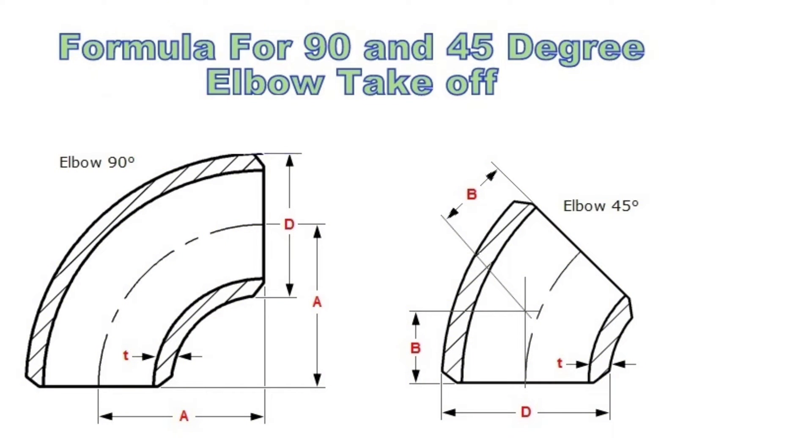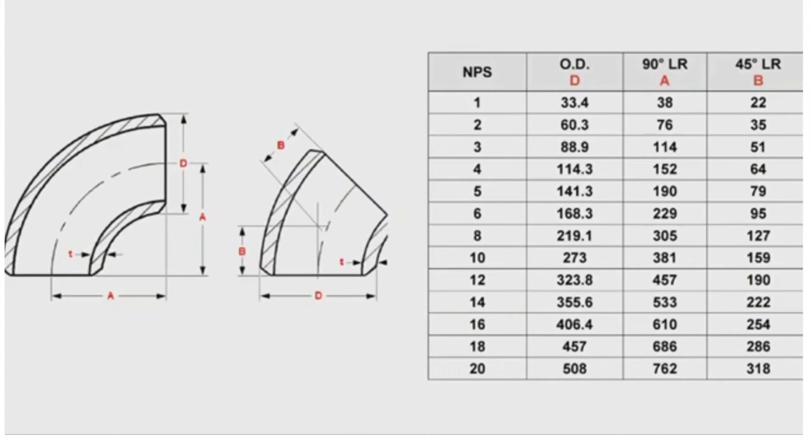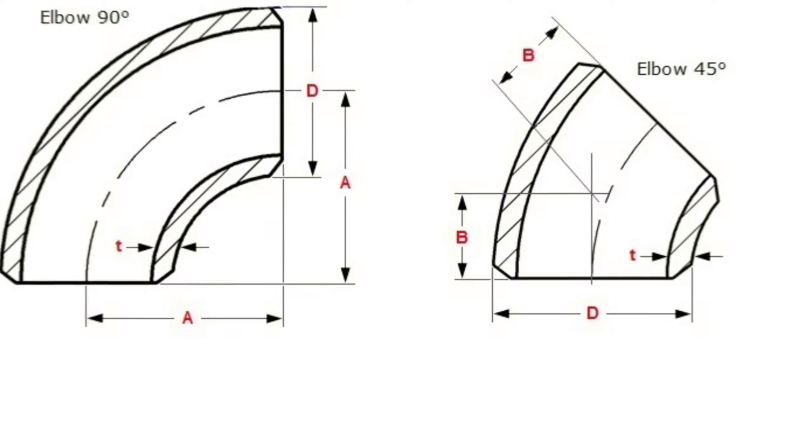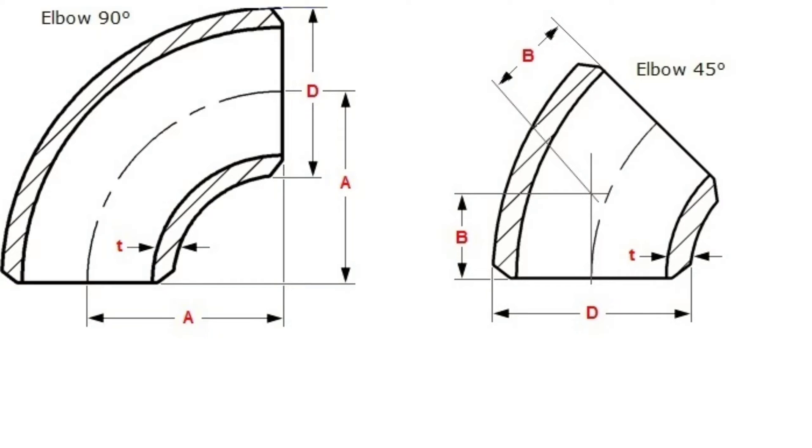Formula for 90 and 45 degree elbow takeoff. For standard degrees of pipe elbows such as 45 degrees and 90 degrees, elbow center to end dimensions are available in standard pipe charts. But many times, custom elbow angles are required at site which should be cut from standard 45 degrees or 90 degrees elbows. Formula for calculating center to end distance of such elbows is as follows.